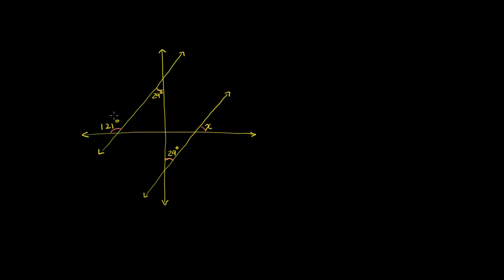So let's say you start on the left-hand side right over here. If this is 121 degrees, then you'd say, well, look, this angle right over here is supplementary to this angle right over there. So this is 121 degrees. 121 degrees plus this green angle has to be equal to 180 degrees.